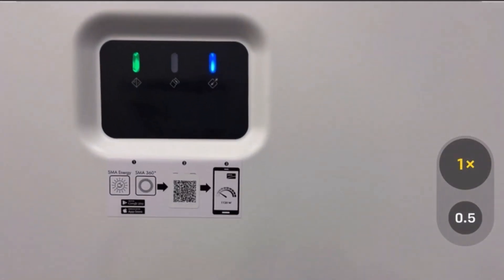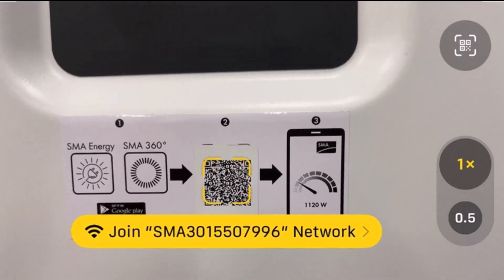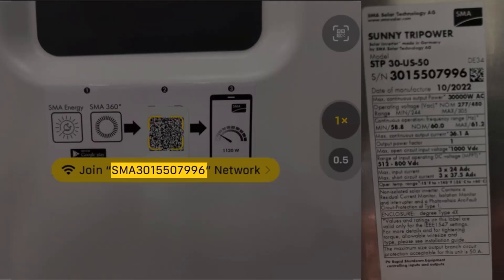If you are installing multiple inverters, ensure that you are using the correct lid for each individual inverter. For best practice, scan the QR code on the lid and compare the inverter serial number located on the right side of the STPX.